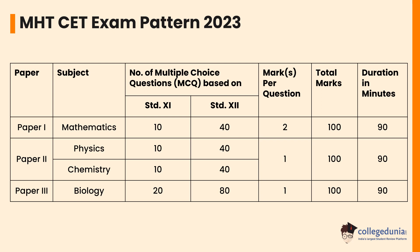In physics or chemistry, the number of MCQs asked from 11th standard are 20, while 80 questions are asked from class 12th. Two marks are allotted for each correct answer, making the total marks 100. These 100 questions are to be solved in 90 minutes.